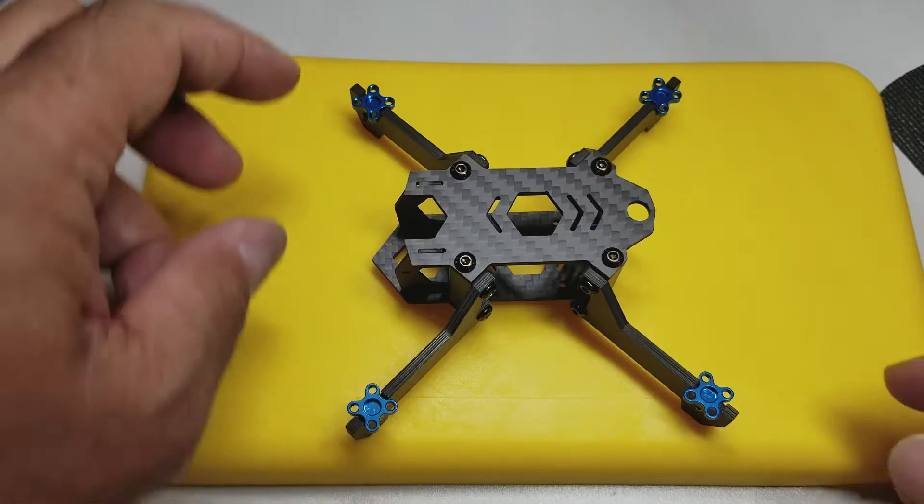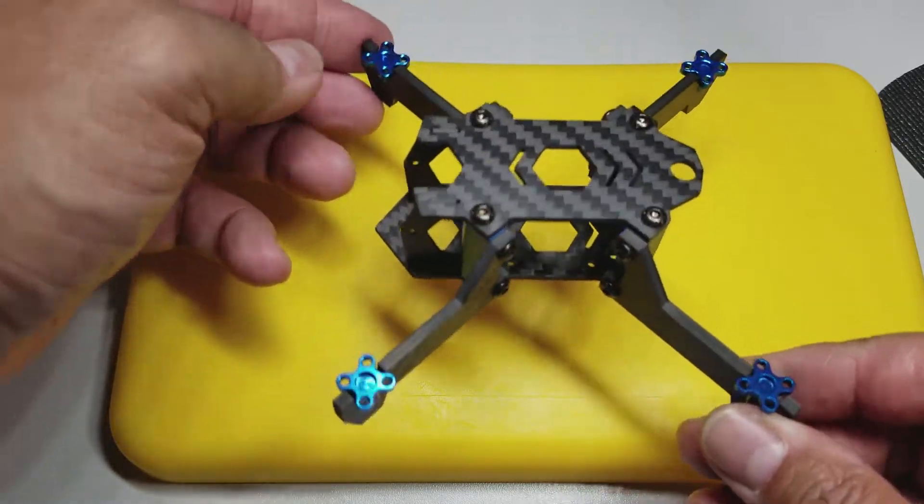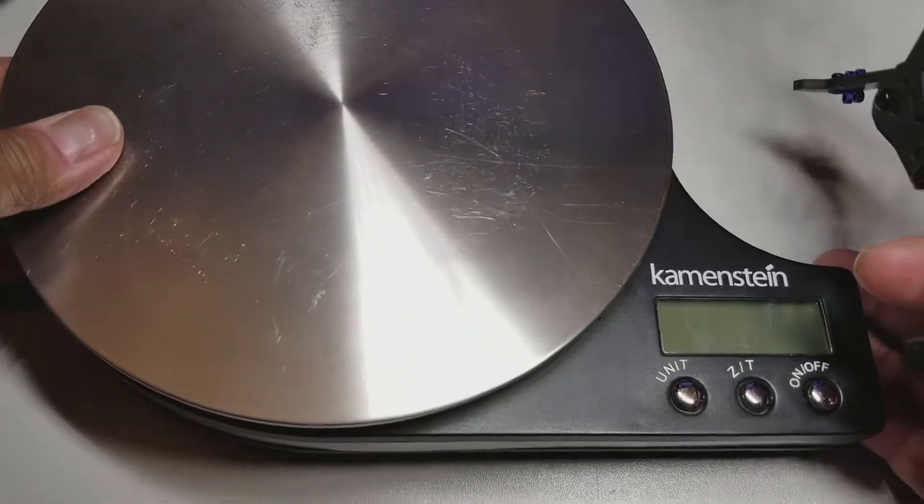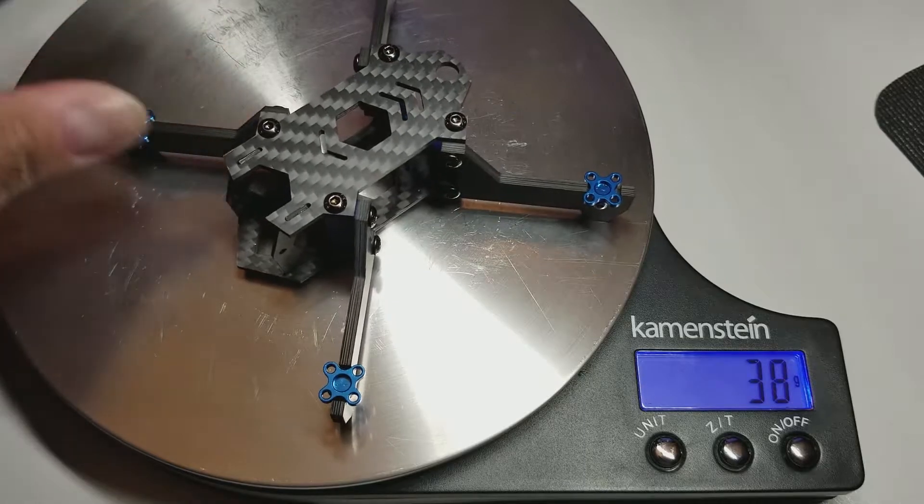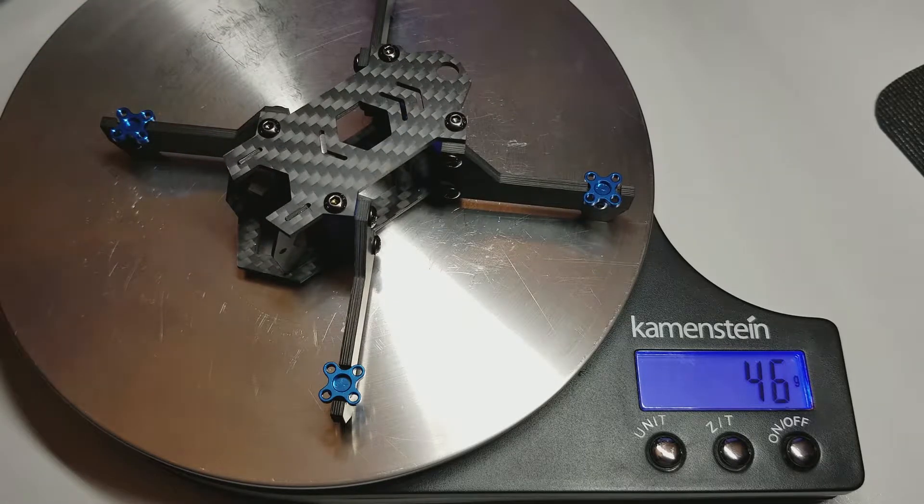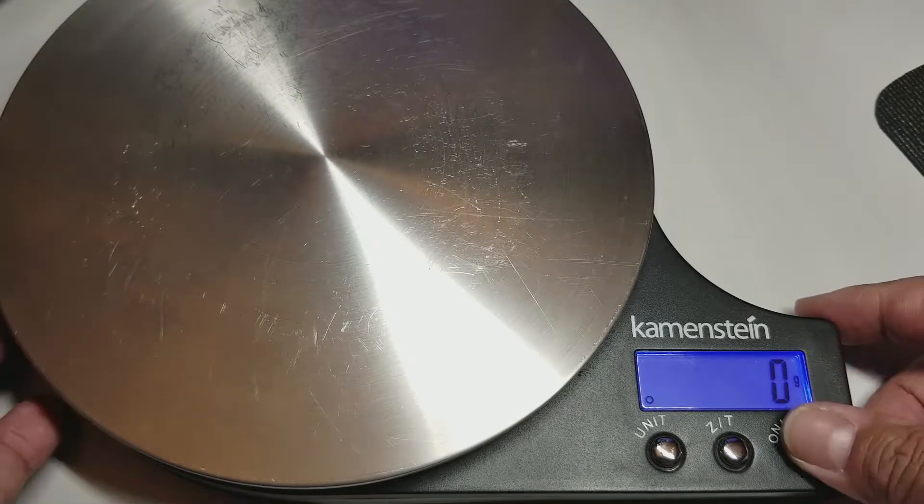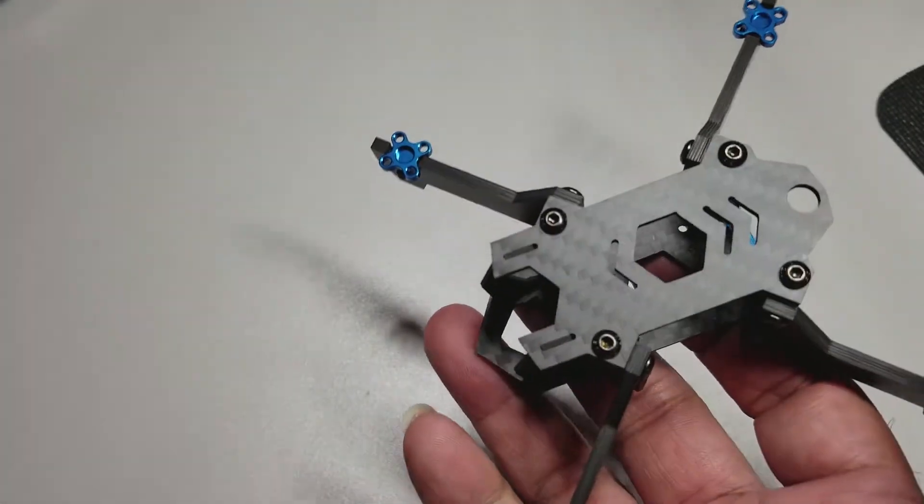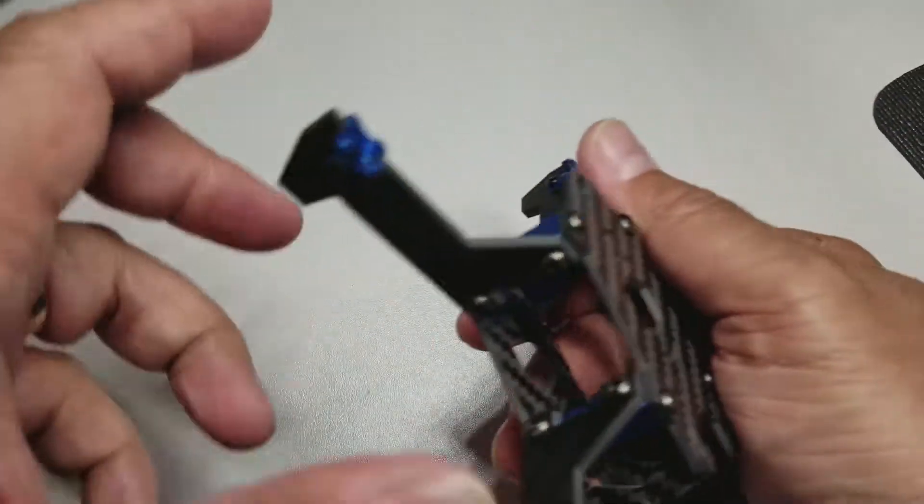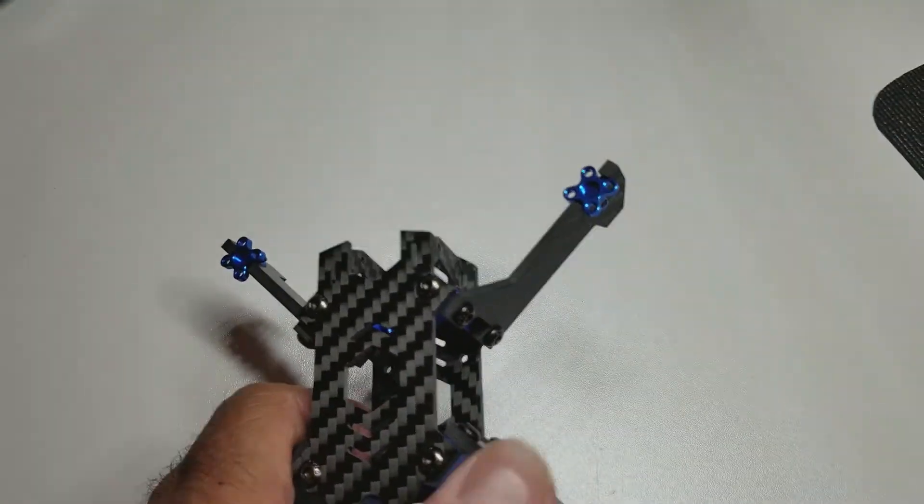All right guys there she is all built up. Looking pretty. Really like the way this frame looks. And the vertical arm setup is really nice. Let's finish up some measurements here before I give you my closing thoughts. All right here we go. Weight just the frame bare is 46 grams. A little on the heavy side like we thought. But that's okay because there's not really many other choices for a vertical arm 125mm type build.